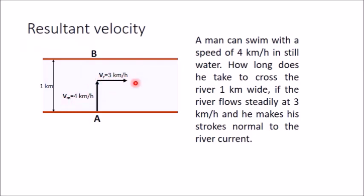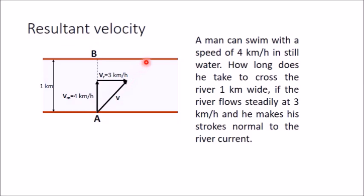To find the resultant velocity, draw the first vector — 4 km per hour — and from its end point draw the river velocity vector — 3 km per hour. Join the initial point of the first vector to the last point of the second vector to get the resultant V. From this right-angle triangle, apply Pythagoras theorem: V equals root of 4 squared plus 3 squared. The man moves in the resultant velocity direction and reaches point C.